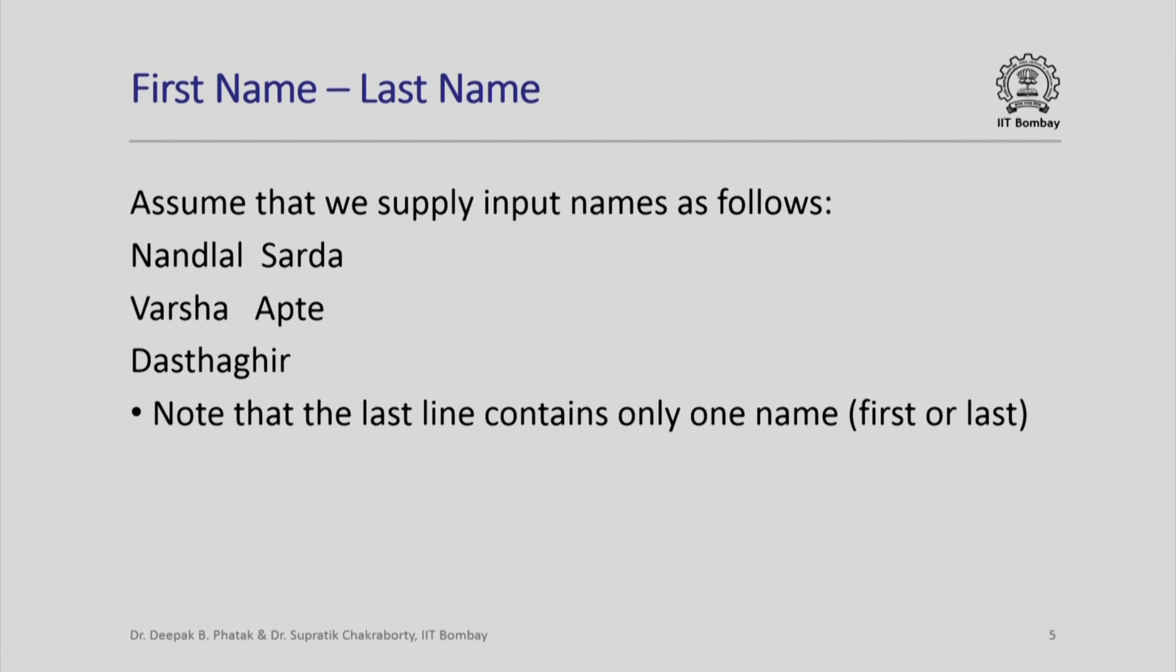Here are some sample names that people might give us when running our program. For example, Nanlal Sarna - this has just one blank in between the first name and second name. Look at the second set, Varsha blank blank blank Aapte. So there are more spaces between the first name and the second. Third one is still very different.